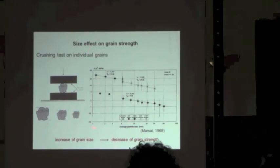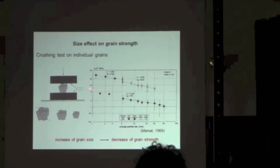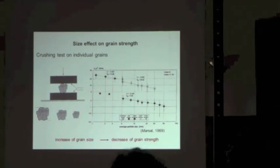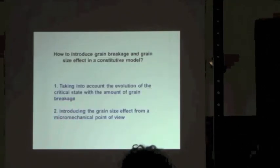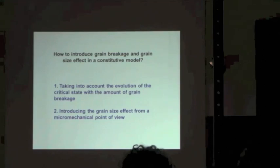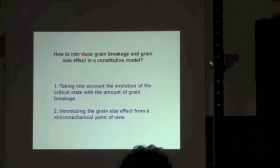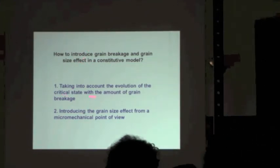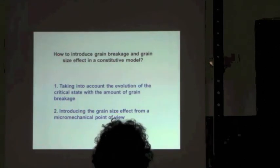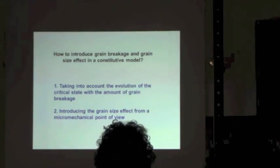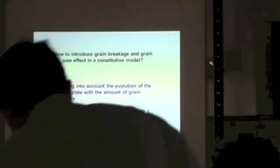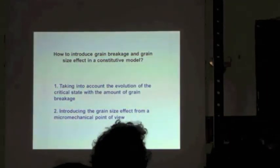Marshall shows that when you increase the size of your grain — this is a crushing test — the strength of the grain decreases when you increase its size. So this is the basic result. Now the idea is to try to introduce these aspects into a constitutive model, and we are going to do that in two steps. First, we take into account the influence of grain breakage, and then we introduce the grain size effect inside the model.